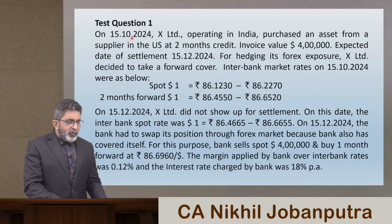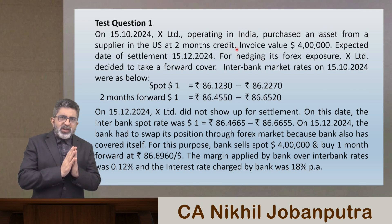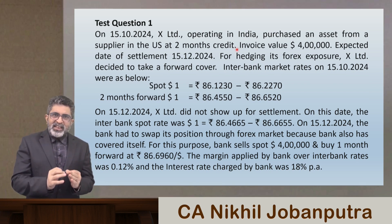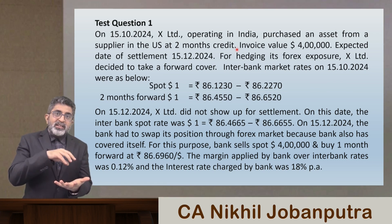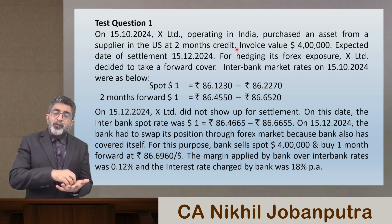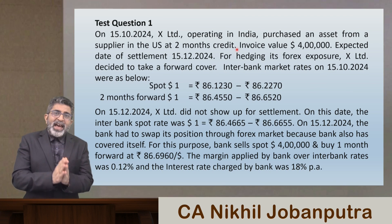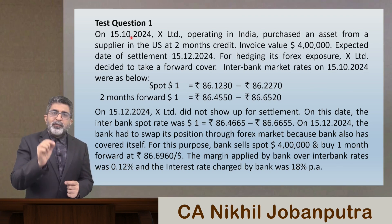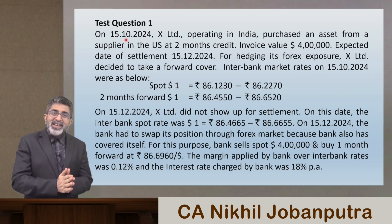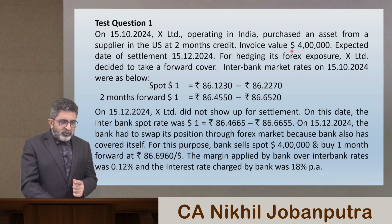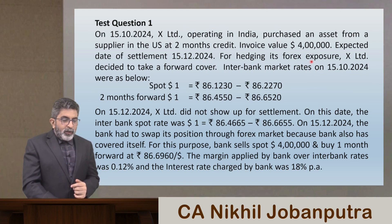The question says: on 15/10/2024, X Limited, operating in India, purchased an asset from a supplier in the US at two months credit. The entity is an importer buying from a US supplier. The supplier offered two months credit, so the expected settlement will be 15/12/2024. The invoice value is $4 lakhs and the expected date of settlement is 15/12/2024.